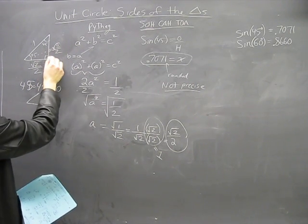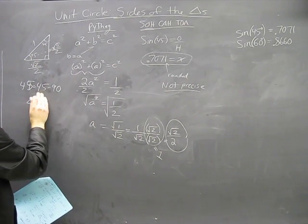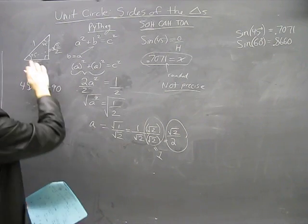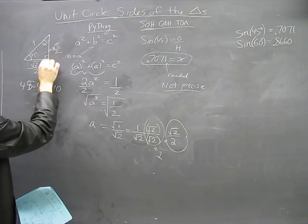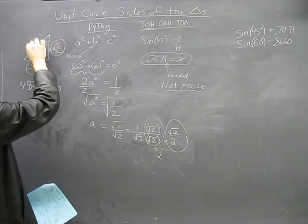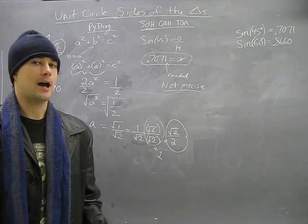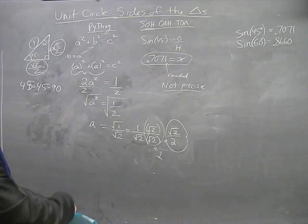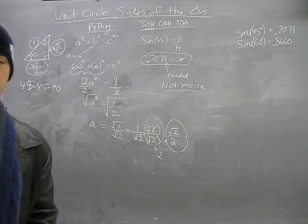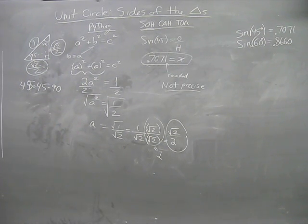So these are your ratios, root two over two, root two over two and a hypotenuse of one. These are what you are going to eventually commit to your memory, preferably ASAP. Next video I'll do the 30-60-90 triangle and show you how we get our side lengths for that.